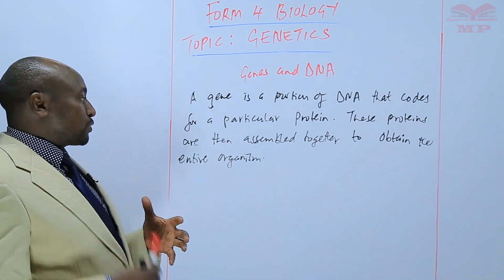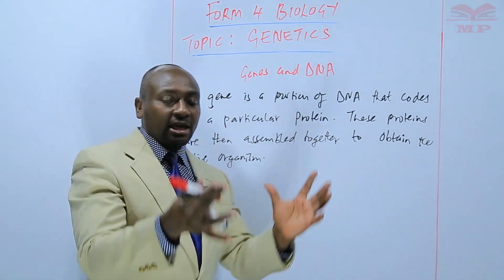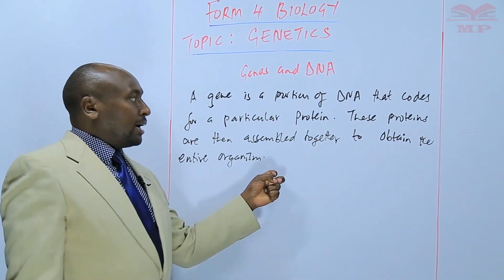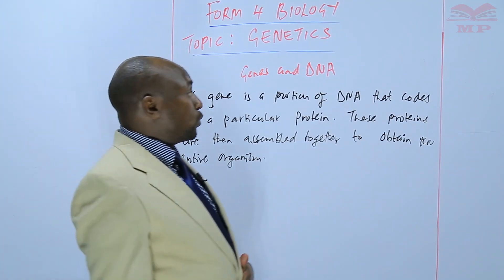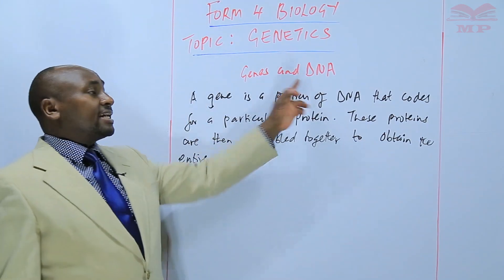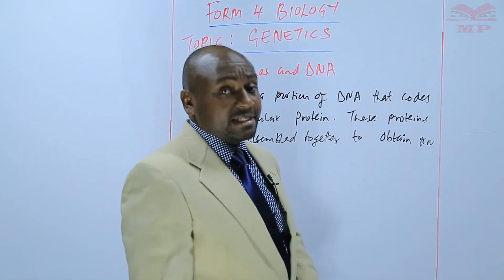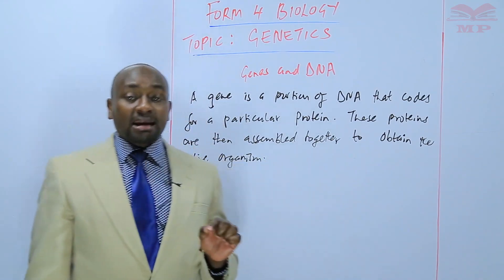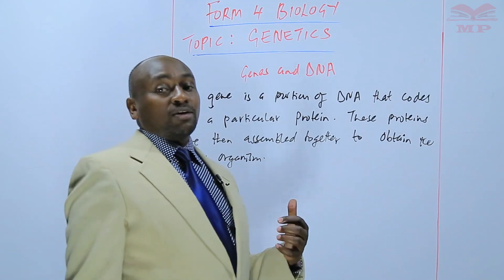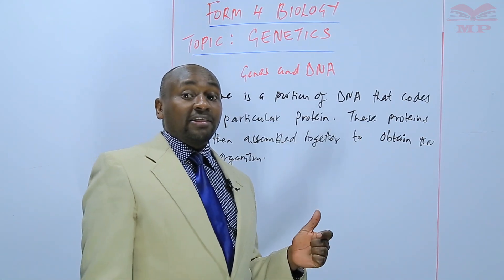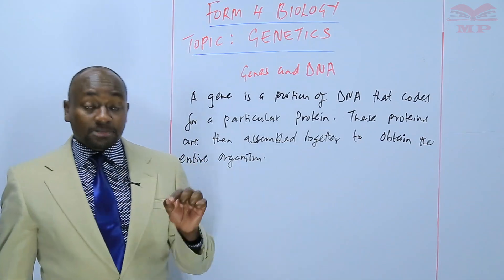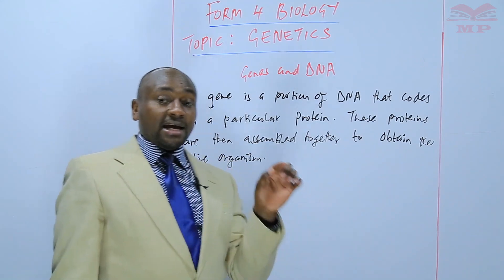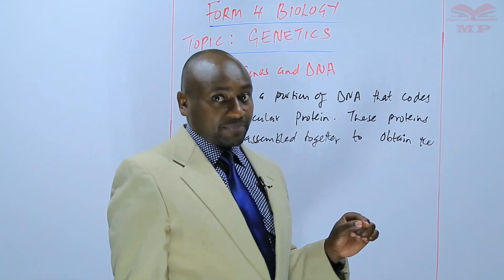When those proteins are assembled together, they determine how the entire organism will be. Previously, there was very little that was known about the DNA until 1953, when two scientists — Watson and Crick — determined the structure of the DNA and explained that DNA is a double helix structure, or a double-stranded structure.